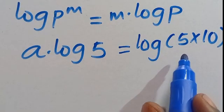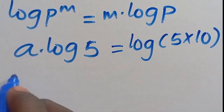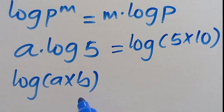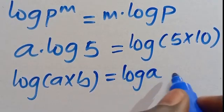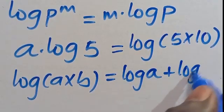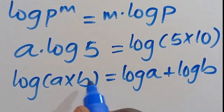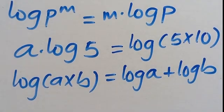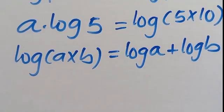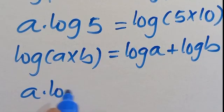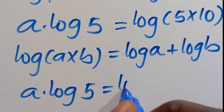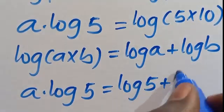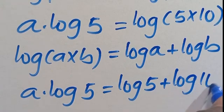Let's do something with the right side. Recall that log of A times B equals log A plus log B — multiplication inside the log changes to addition. Applying it here, we are going to have A multiplied by log 5 equals log 5 plus log 10.